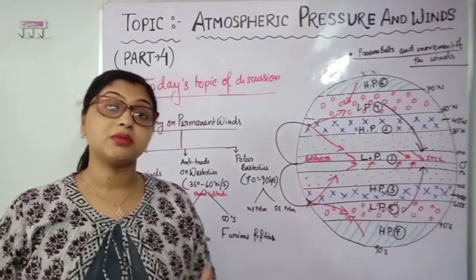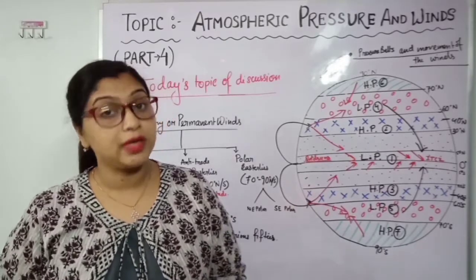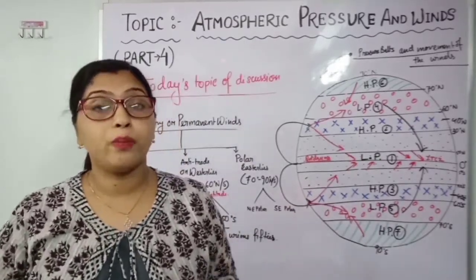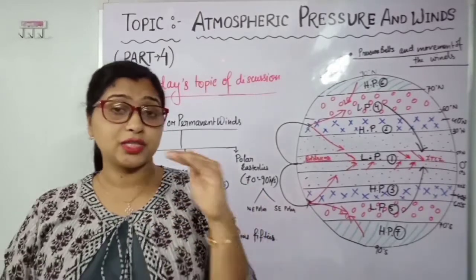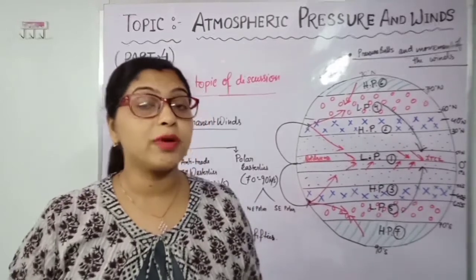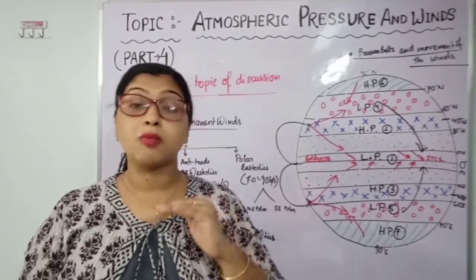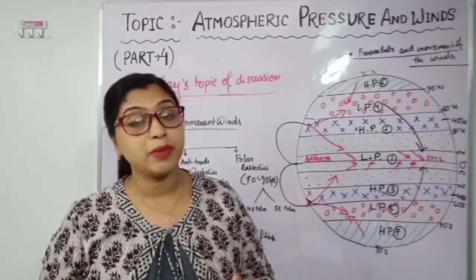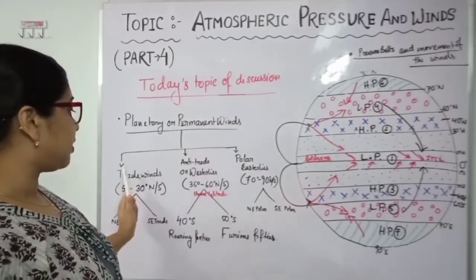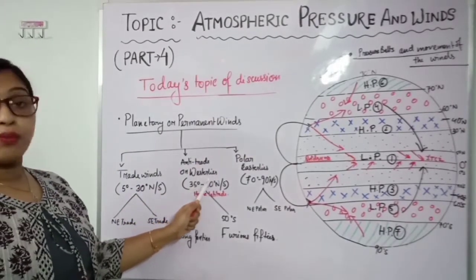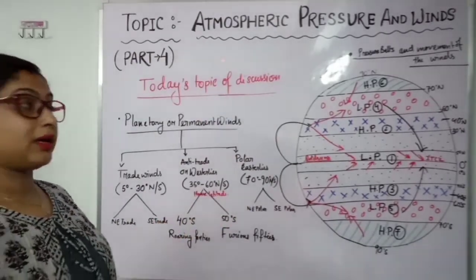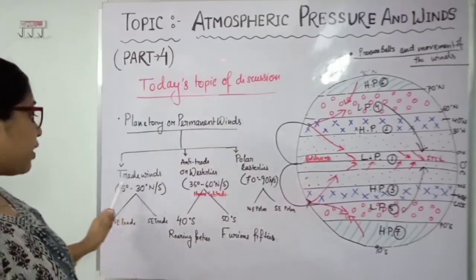So, what is wind? The horizontal movement of the air is called wind. And which wind prevails or blows throughout the year at the same direction and the same speed — these are known as permanent or planetary winds. Planetary winds are basically divided into three types: trade wind, anti-trade wind or westerly, and number three is polar easterly. Here I have written their latitudinal extension so that when I explain you can understand.